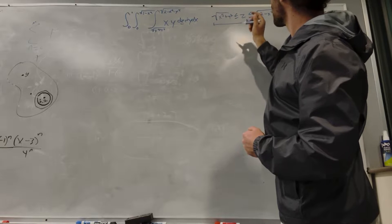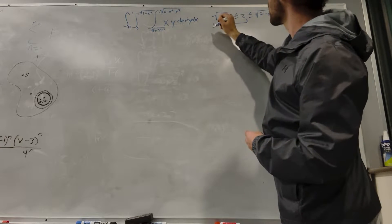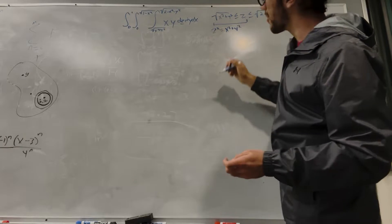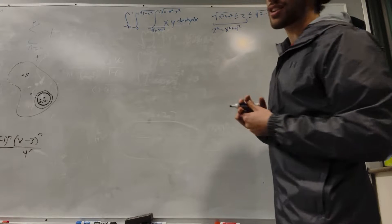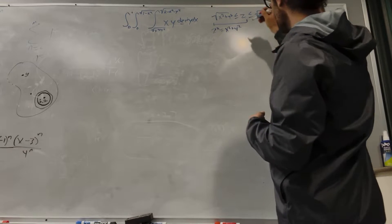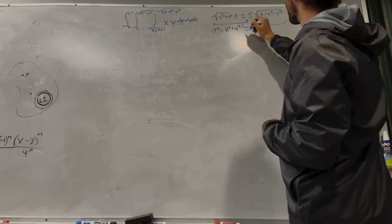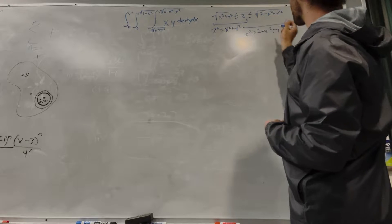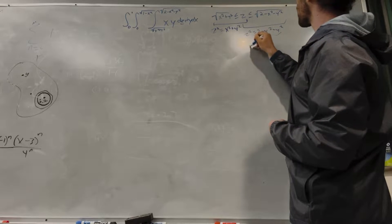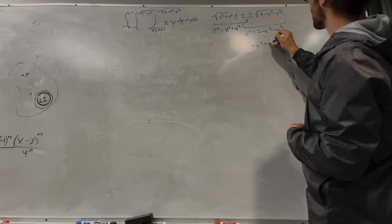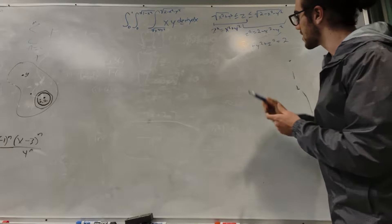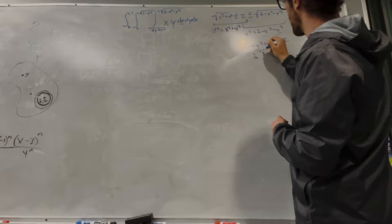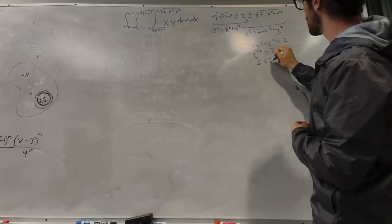Let's look at this first. We know that if we square both sides, we get z squared is equal to x squared plus y squared. This is just a cone, a cone that's perfectly 45 degrees. And now if we look at this side and square both sides, we get z squared equals 2 minus x squared minus y squared. If we move those terms over, we get x squared plus y squared plus z squared equals 2, which means this is a sphere with radius square root of 2.